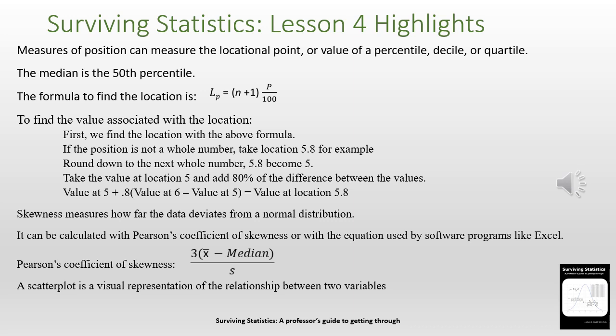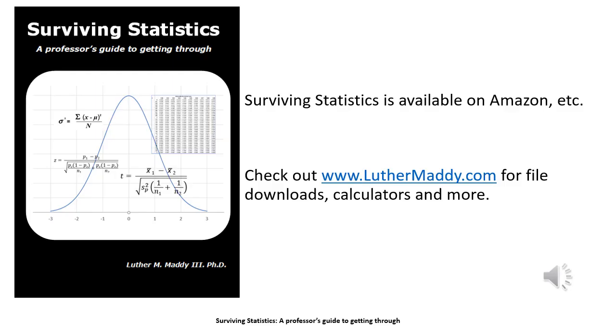To recap chapter 4 of Surviving Statistics: we talked about measures of position and how to compute the location of a percentile, and discussed the difference between location and the value at that location. We covered skewness — determining it by comparing the median and mean, and computing the coefficient of skewness using both the software method and Pearson's method. We also talked about scatter plots for seeing relationships or correlation between two variables. These lessons are based on my textbook Surviving Statistics, available on Amazon — check my website for downloadable files, calculators, and other resources.